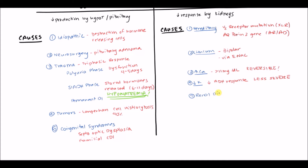General renal diseases can also cause nephrogenic diabetes insipidus, because eventually they affect the cortical collecting ducts and cause dysfunction of those cells. Examples include autosomal dominant polycystic kidney disease, sickle cell disease, and amyloidosis. Essentially any pathology that affects the collecting tubule can lead to diabetes insipidus.